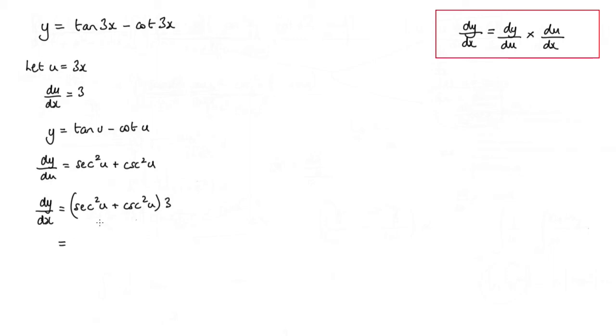So just simplifying that a little bit and resubstituting back in for u being 3x, we'll end up with 3 sec squared 3x plus 3 cosec squared 3x.